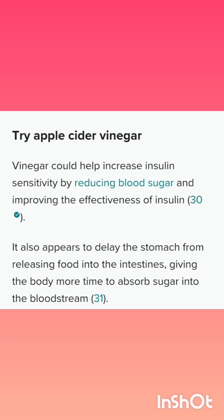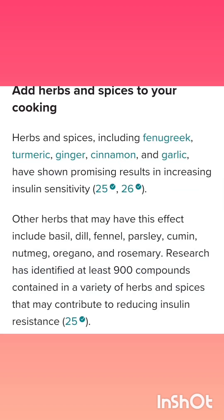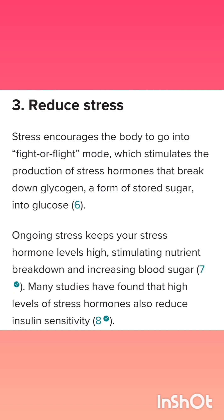As soon as the carbohydrates enter into your stomach, they get digested and glucose will be the nutrient released. That glucose is absorbed into the bloodstream, and in the intestines also the glucose gets absorbed into the bloodstream.